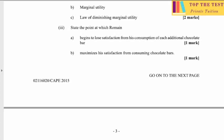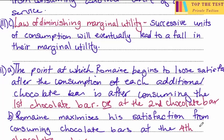Part 3 asks us to state the point at which Romaine begins to lose satisfaction from consuming each additional chocolate bar, and part b asks the point at which he maximizes his satisfaction. The answer can be written in either of two ways: after consuming the first chocolate bar, or at the second chocolate bar — both mean the same thing.